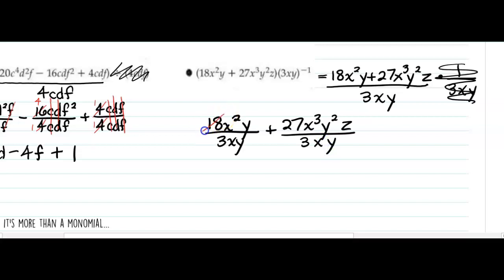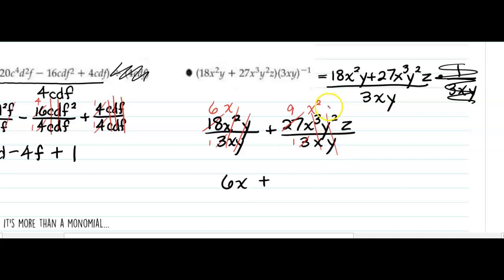Now we simplify. 18 and 3 cancel to give me 6 over 1. The x squared and the x cancel to give me just an x in the numerator, and the y's cancel. So my first term is 6x. For the next term, 27 and 3 cancel to give me 9 over 1. The x cubed and the x cancel to leave 2 x's in the numerator. The y squared and the y cancel leaving more of the y in the numerator. And nothing cancels with the z, so the z stays. So my second term is 9x squared y z.